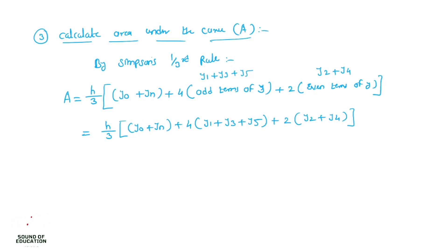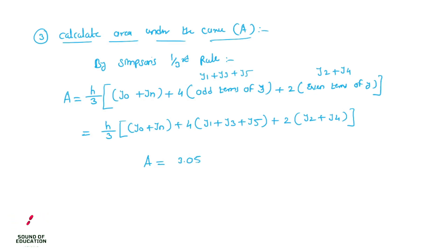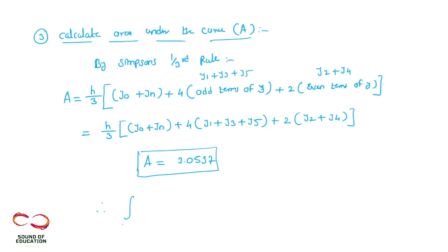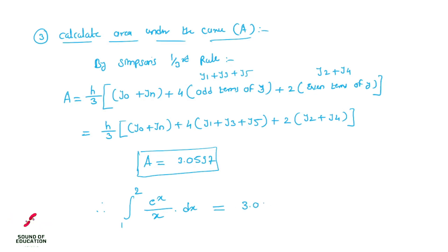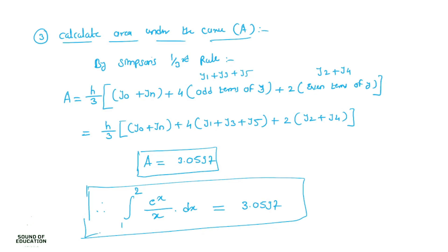Put all the values of y into the equation and calculate the area under the curve. After calculation, the area under the curve by using Simpson's one-third rule for this given function is 3.0597. So the final answer is: the integration of 1 to 2 of e raised to x divided by x dx is equal to 3.0597.